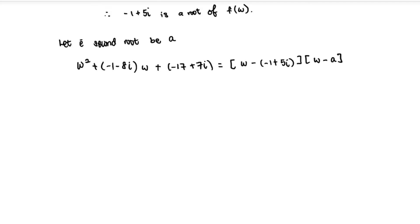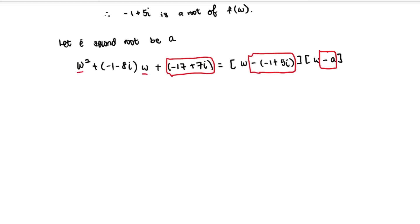We can use several methods. By observation, notice that a is a standalone value. When the constant term −a multiplies −(−1 + 5i), it produces the constant term of the equation, which is −17 + 7i, since w is not involved in that product. So we can equate those directly.